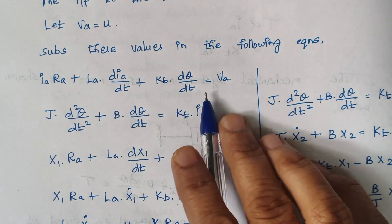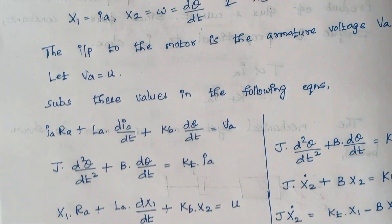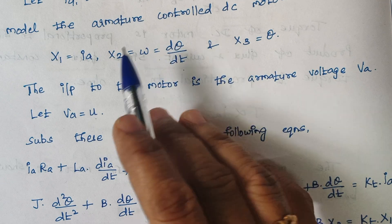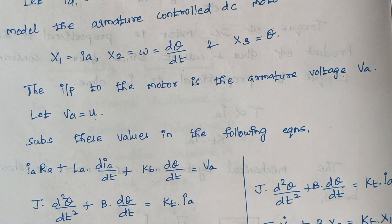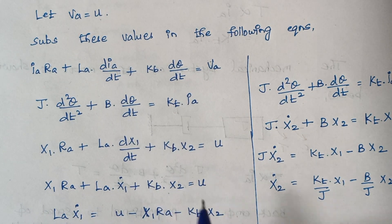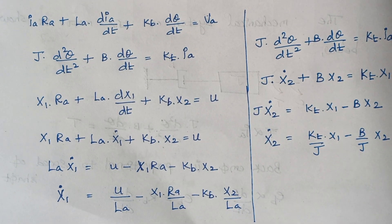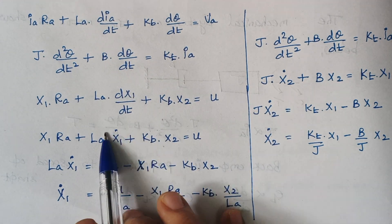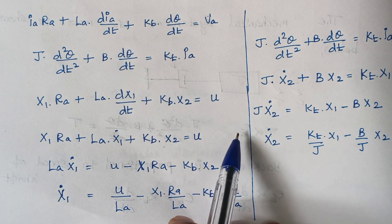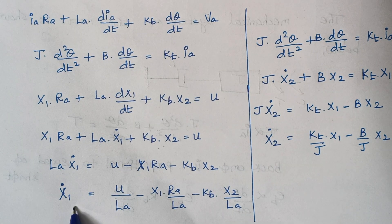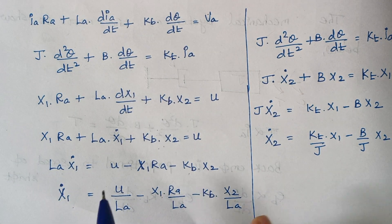We substitute these state variable values into equations A and B. In equation A, replace IA by X1, dθ/dt by X2, and theta by X3. After replacing, rearrange to form an expression for X1 dot — keep X1 dot on the left and move the remaining terms to the right-hand side, noting a sign change. Then move LA to the right-hand side to isolate X1 dot.